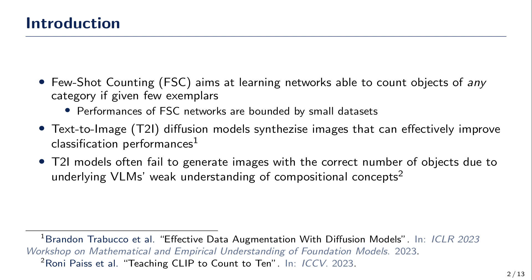Text-to-image diffusion models synthesize images that can effectively augment classification datasets. However, these methods do not apply straightforwardly to counting datasets, as text-to-image models struggle to generate images with the correct number of objects. Our goal is to adapt pre-trained text-to-image models to generate accurate and diverse augmentations for Few-Shot Counting.